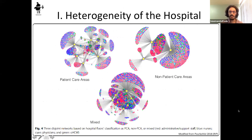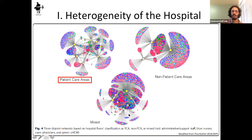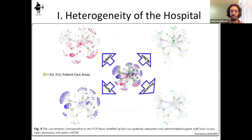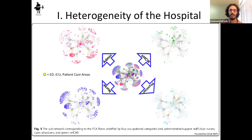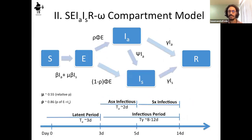The hospital is divided into four classes of healthcare workers, similar to a prior paper's graphic. Colors correspond to different healthcare workers across patient care areas, non-patient care areas, and mixed areas. The focus is on patient care areas. The classes in their model are physicians, nurses, and admin/other staff, distributed across patient floors, emergency rooms, and ICUs. They extend the classic SEIR compartment model.